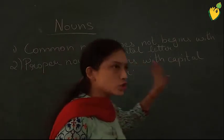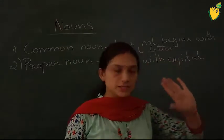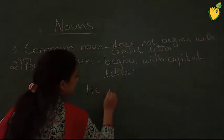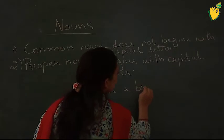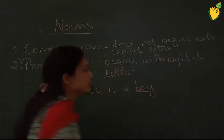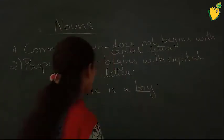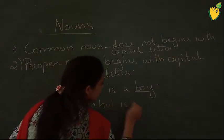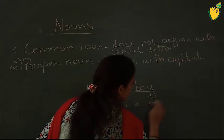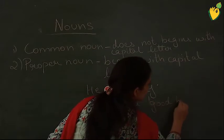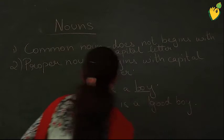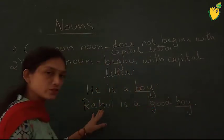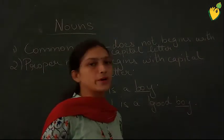Proper noun — when a particular name is given to a particular person, that is known as your proper noun. For example: 'He is a boy' — 'boy' can be a common noun because it can be any boy. But 'Rahul is a good boy' — here 'boy' is a common noun and the special name 'Rahul' is a proper noun.